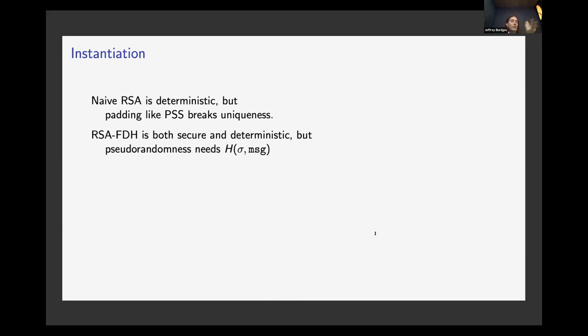So the first thing I want to talk about is how you build these things. So a classic example is RSA - RSA is deterministic, RSA is not that secure, and most of the padding systems that we use for RSA to make it secure, the signer adds some randomness, which makes it not a VRF. If I take RSA with a full domain hash, then this is both secure and it's deterministic. So then I have this nice property, this uniqueness property.